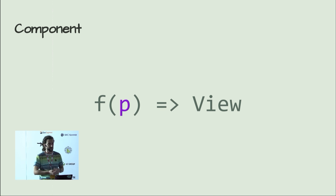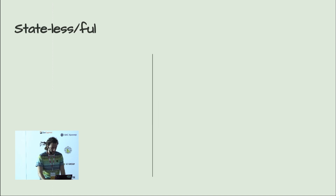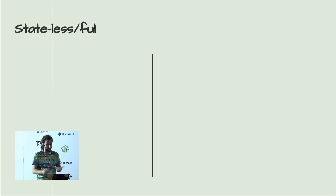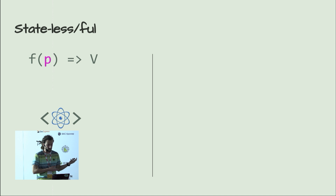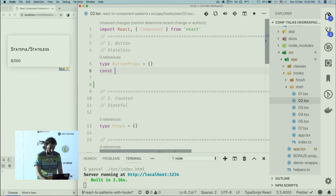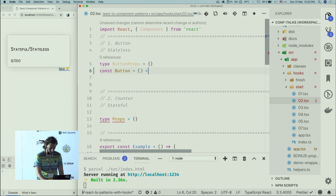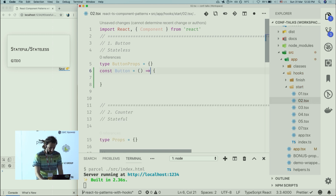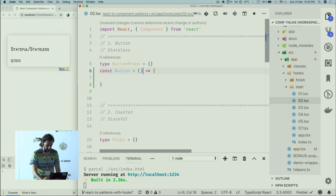A component is a pure function that accepts some arguments called props and returns some view. In terms of patterns, we have two initial patterns: stateless and stateful components. A stateless component is just that function. Let's go back to the editor and implement a stateless component — we'll do a Button, because buttons are nice. This is just like normal JavaScript; I'm creating a component called Button and using some props.